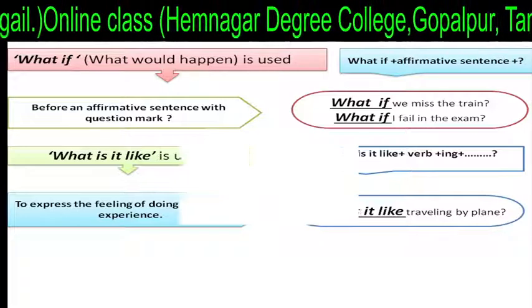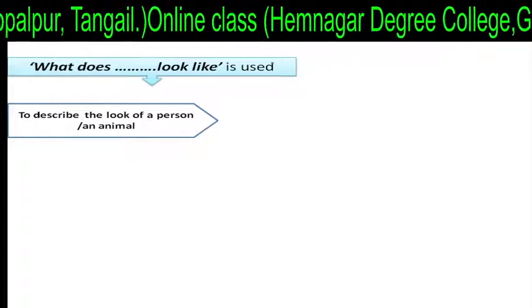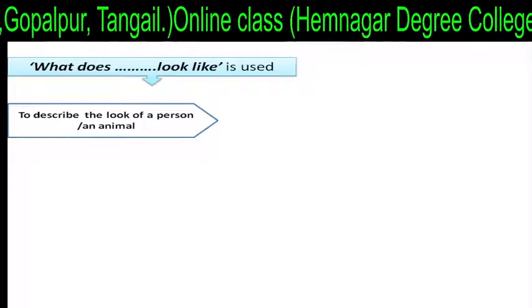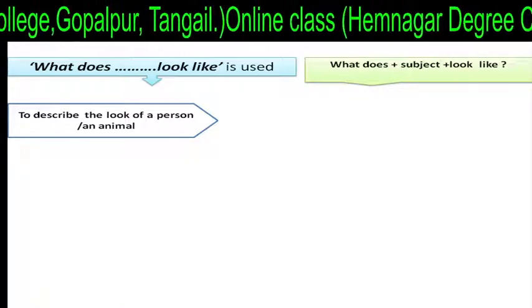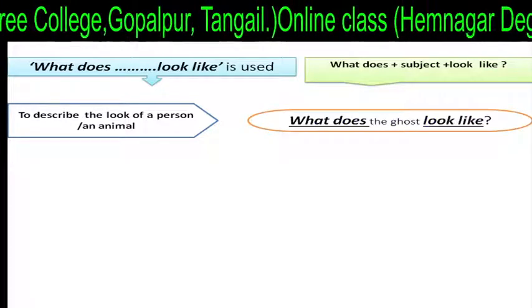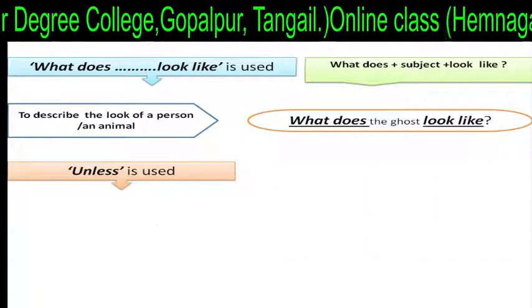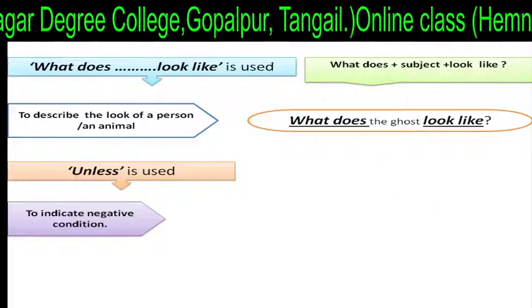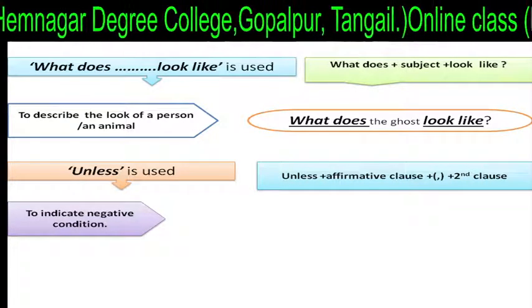For example: 'What is it like traveling by plane?' What does it look like is used to describe the look or appearance of a person or animal. Structure: 'What does' plus subject plus 'look like' plus question mark. For example: 'What does the ghost look like?'